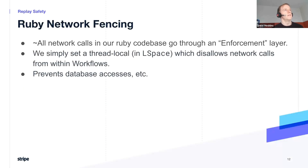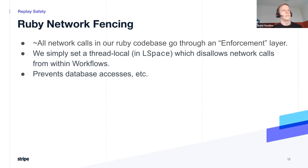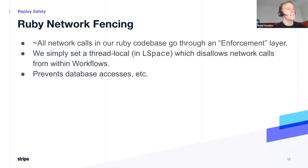Another thing we do in Ruby is network fencing — we prevent all network calls from within workflows. We're able to do this because we already have an enforcement layer that all network calls go through in our Ruby codebase. We set a thread local that says network calls aren't allowed and give a helpful error message. We're about to roll this out in production — this is the mechanism we use to prevent Mongo and Redis access and so forth.